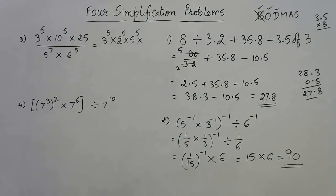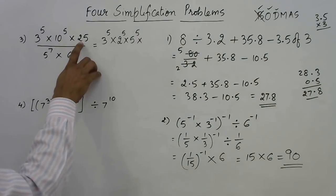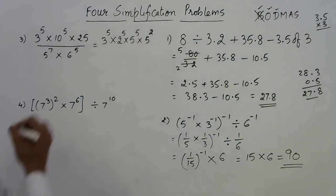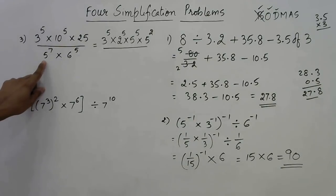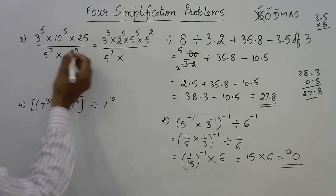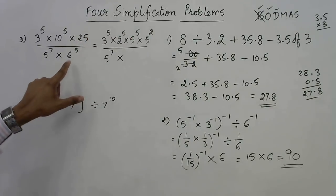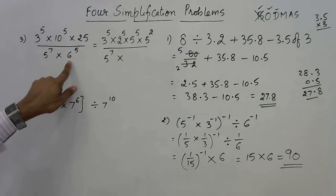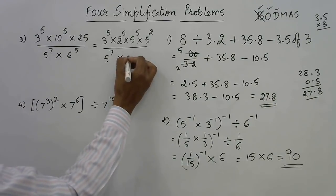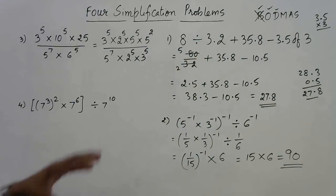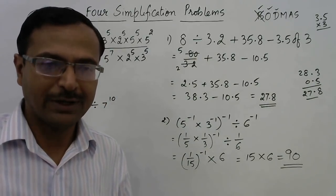Now 25 — is 25 prime? No, so convert it into its prime factors. 25 is 5 times 5, which is 5 squared, so the base becomes prime again. In the denominator we have 5 power 7; base 5 is prime, so power 7 remains as is. Then 6 raised to power 5 — base 6 is not prime. We can convert 6 into its prime factors, 2 times 3, so both 2 and 3 will have power 5. This is a very important step, and once you reach it, the next step gives you the answer.